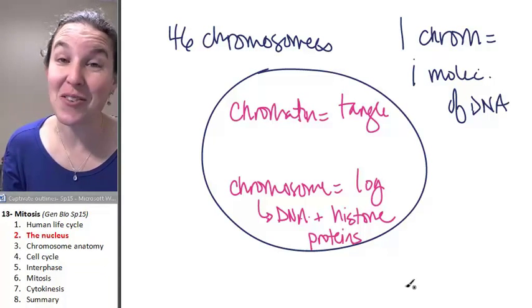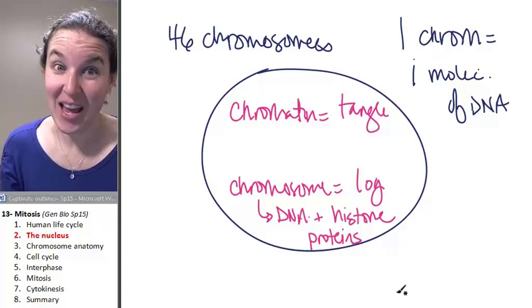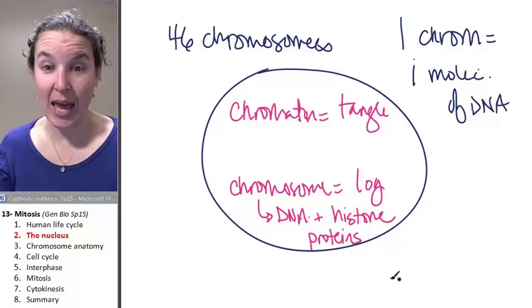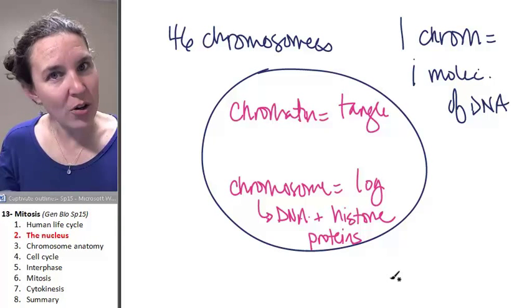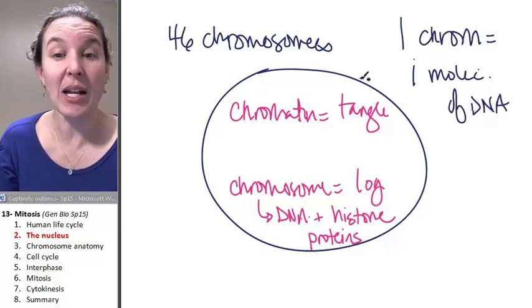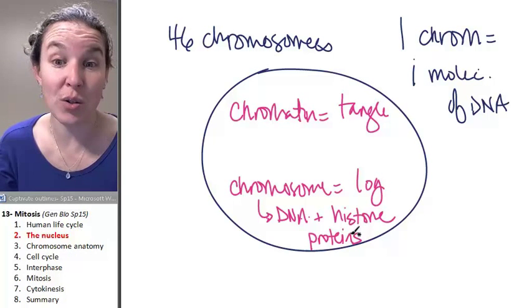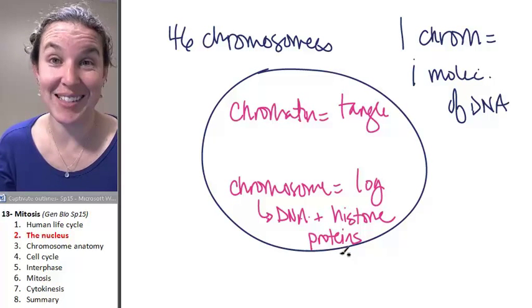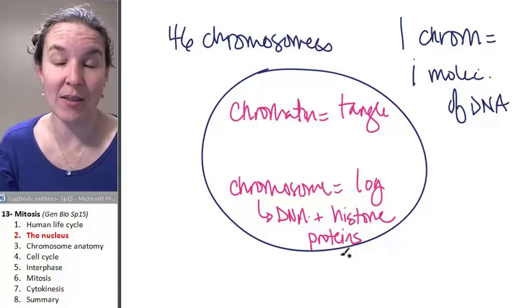And histone proteins are important. We're going to see them again when we start looking at biodiversity, and we'll see that not all critters have histone proteins, but a lot of us do. We can actually tell who's related to who based on the presence or absence of histone proteins with the DNA.